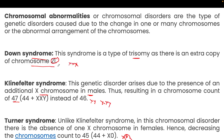To summarize chromosomal disorders: Down syndrome occurs at chromosome number 21 with one extra chromosome. Klinefelter syndrome occurs in males in the sex chromosome with an extra X. Turner syndrome occurs in females where one X chromosome is absent. These are the three typical chromosomal disorders.